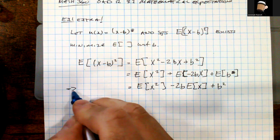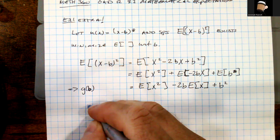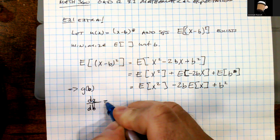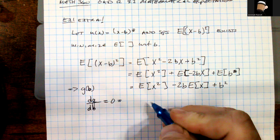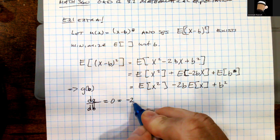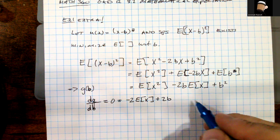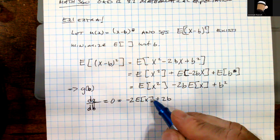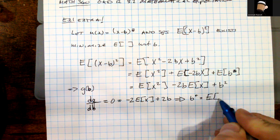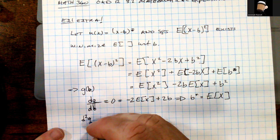Let's define this function as g(b) for simplicity. To find the minimum, we look at dg/db and set that equal to zero to find any critical points. With respect to b, the E[x²] term is a constant, and we're left with minus 2·E[x] plus 2b equals zero.